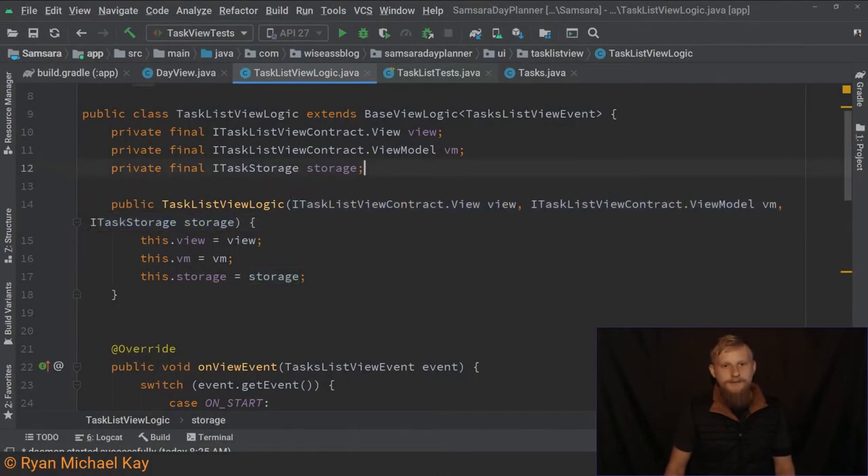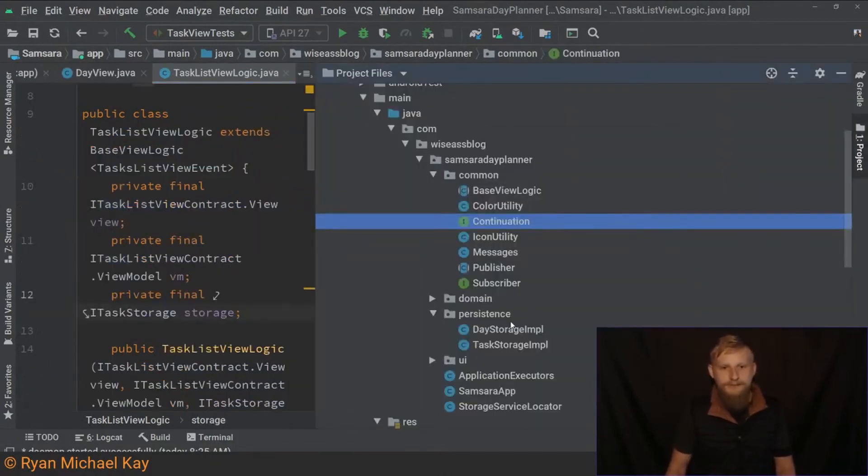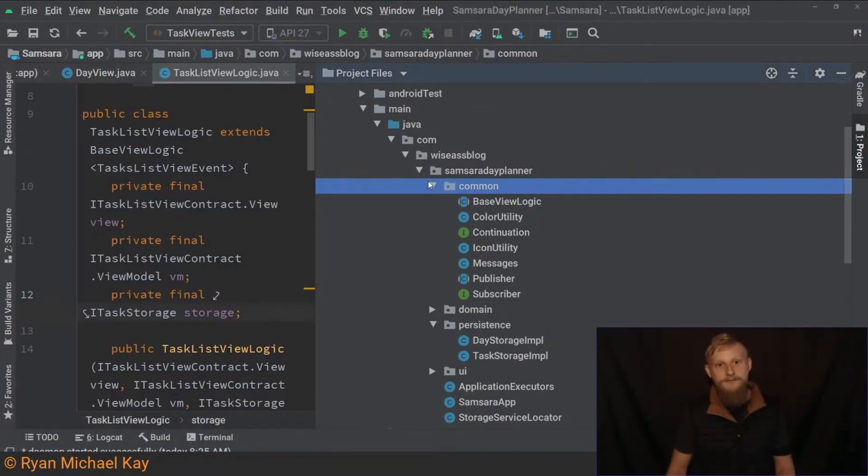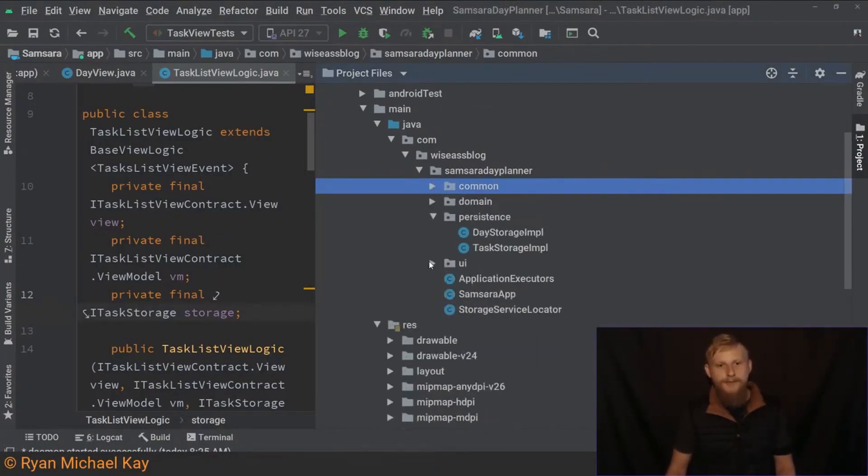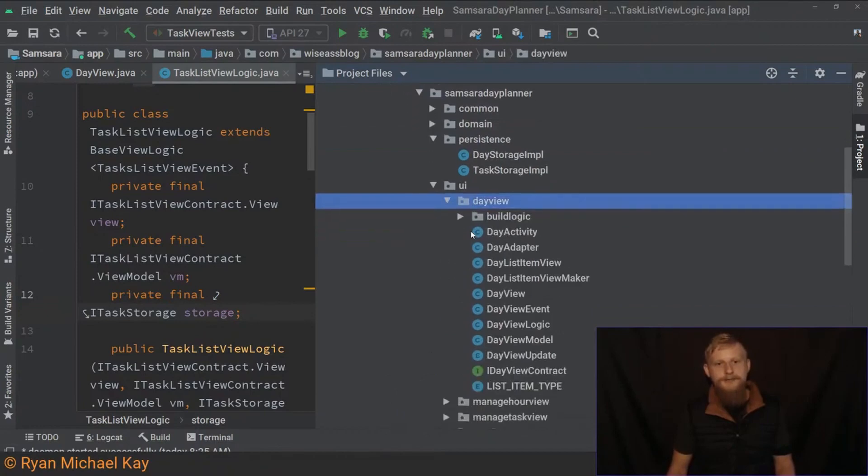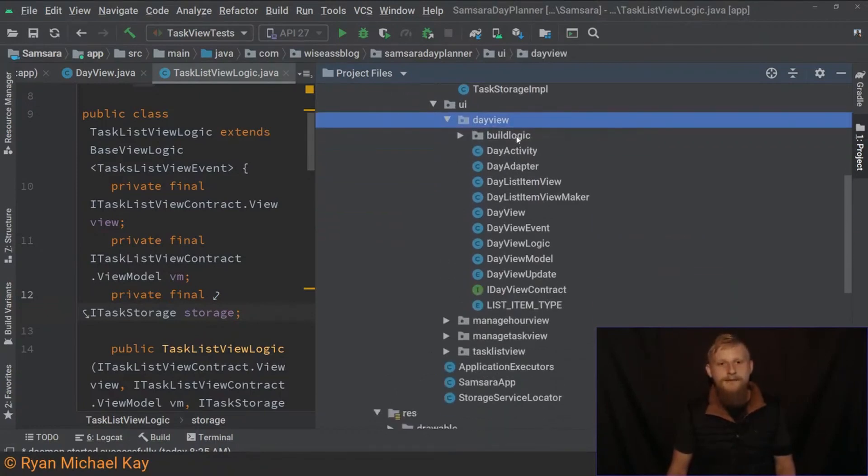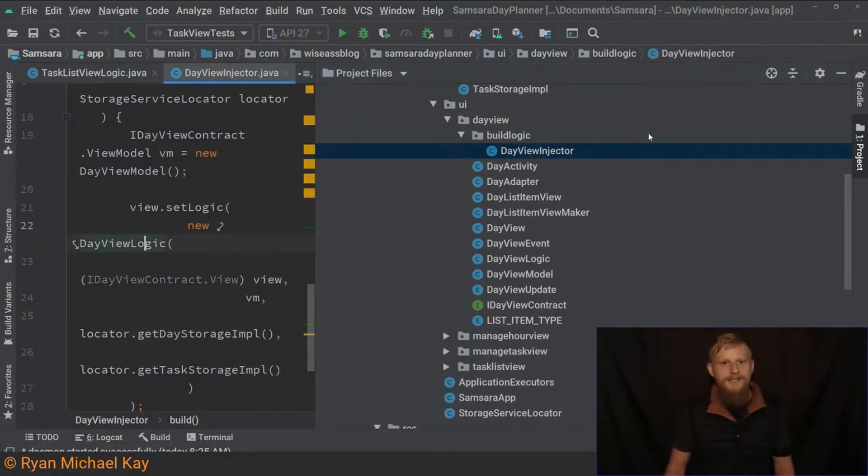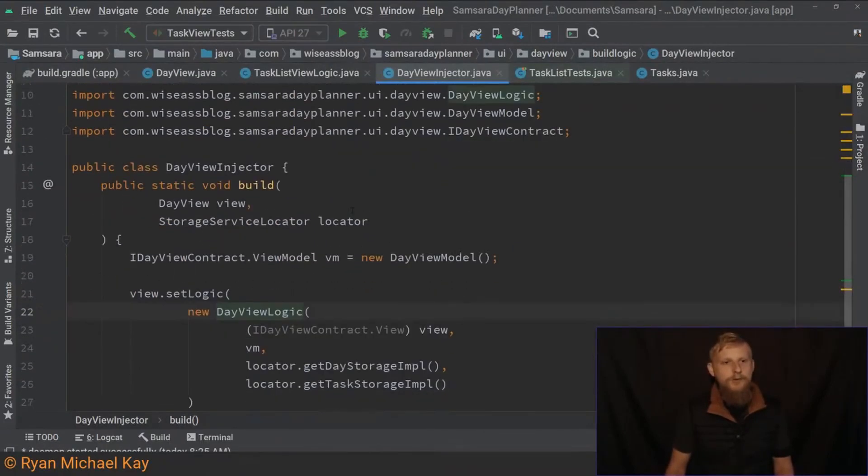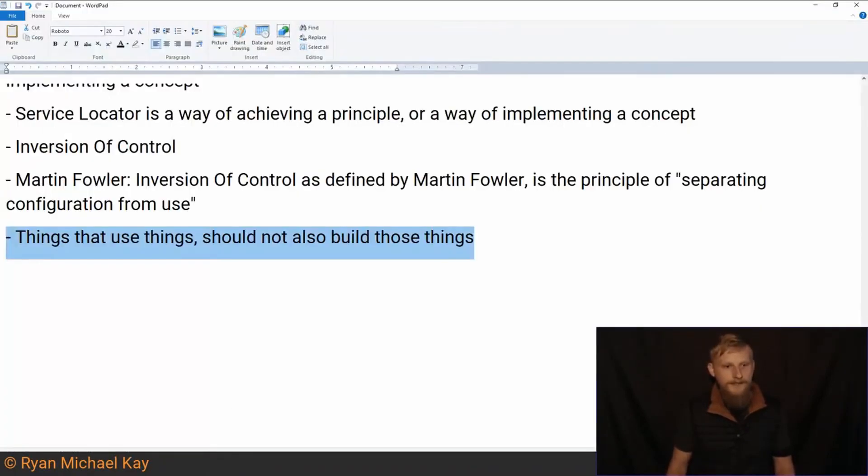So how we solve that is we create some special part of our code. And you heard this here first. This is my way of explaining this. Every component, every feature in your application has build logic. And build logic is the code which is required to, it's the configuration part. How do we wire things together so that the thing that uses the things doesn't also configure and build the things?